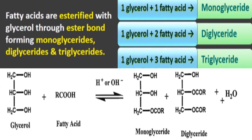Fatty acids are esterified with glycerol through an ester bond, forming monoglycerides, diglycerides, and triglycerides. If one glycerol is attached with one fatty acid, the structure is called monoglyceride. If attached with two fatty acids, it is diglyceride. If attached with three fatty acids, triglyceride is formed.